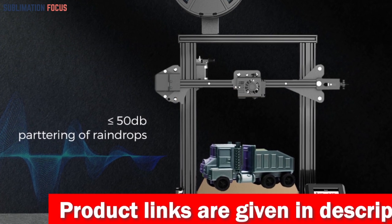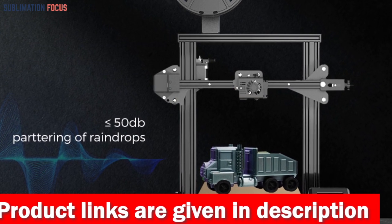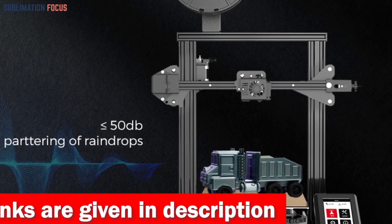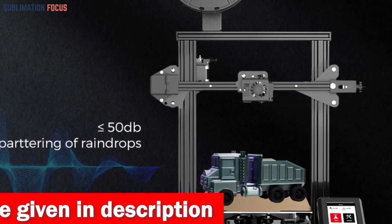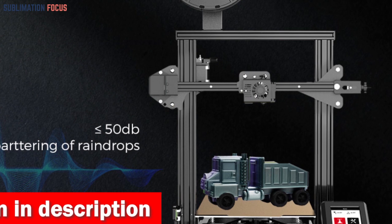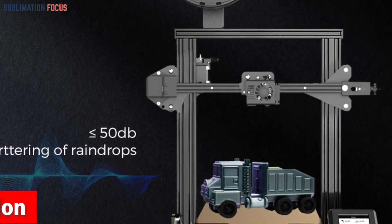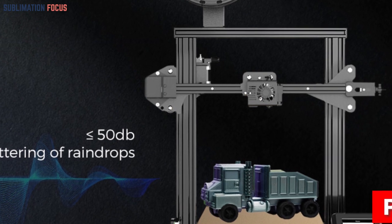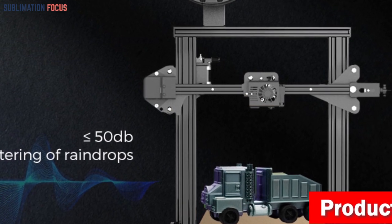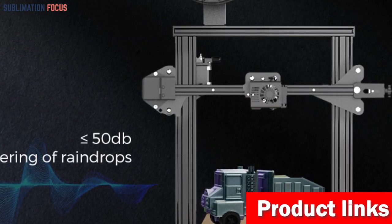But that's not all. The Aquila X3 has a magnetic PEI steel platform, revolutionizing how you extract your masterpieces. Removing your printed molds has always been challenging, but with a double-sided platform that boasts unrivaled durability, you can bid farewell to maintenance costs and welcome a longer-lasting printing experience.